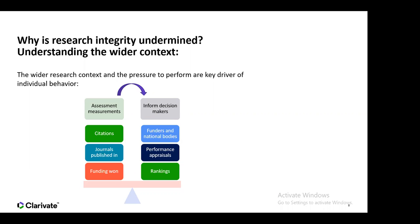Why is research integrity undermined? The critical context is the wider research environment — there's the pressure to perform, the pressure to publish, the famous phrase 'publish or perish.' Decision makers such as funding bodies, national bodies, and government policies around research performance appraisals and rankings all take into consideration assessment measures. These typically look at research output metrics: journals published in, number of publications, funding awarded, citations, and derived metrics like the h-index or journal impact factor.